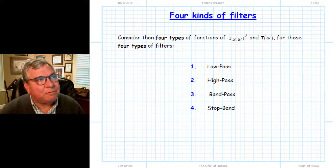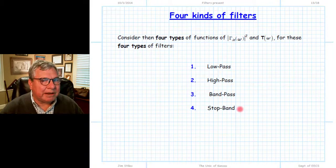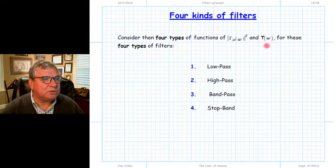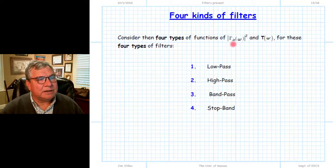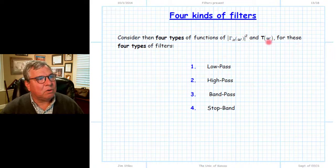We can now define four kinds of microwave filters — terms you've seen before: low-pass, high-pass, band-pass, and stop-band. With respect to microwave filters, we define these not in terms of power absorbed by the filter, since the filter is lossless, but in terms of the two fundamental functions: the power transmission coefficient T, and equivalently the magnitude squared of the input reflection coefficient |Γin|². Remember these two values must always sum to one by conservation of energy.